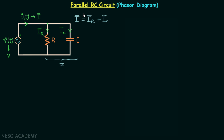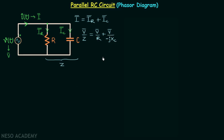We can write I phasor equal to V phasor divided by the impedance Z. IR phasor equals V phasor divided by resistance R, and IC phasor equals V phasor divided by negative jXC, giving us plus V phasor divided by negative jXC.